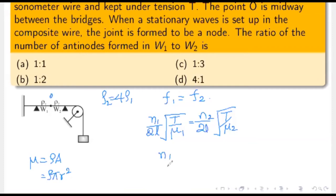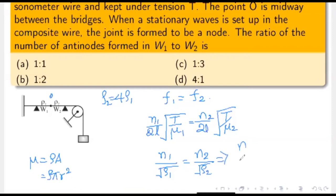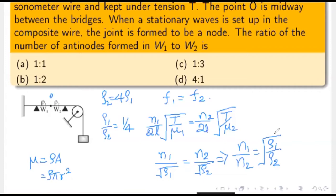After cancellation, we get n1/√ρ1 = n2/√ρ2, so the ratio n1/n2 = √(ρ1/ρ2). From the given data, ρ1/ρ2 = 1/4, so n1/n2 = √(1/4) = 1/2. Therefore the number of antinodes in W1 to W2 is in the ratio 1:2. Option B is correct.